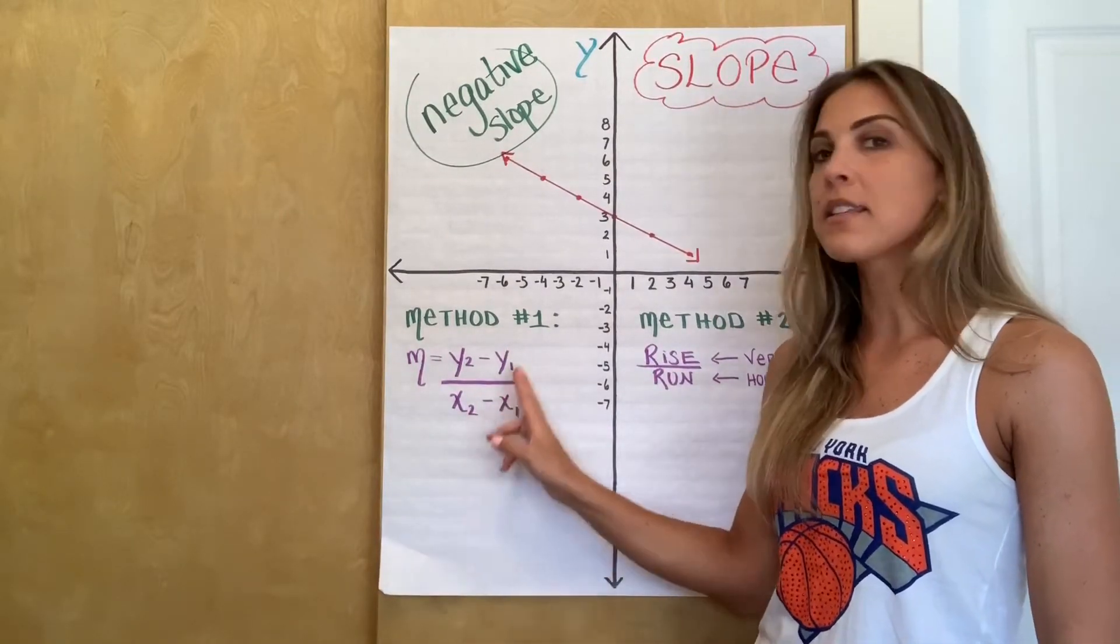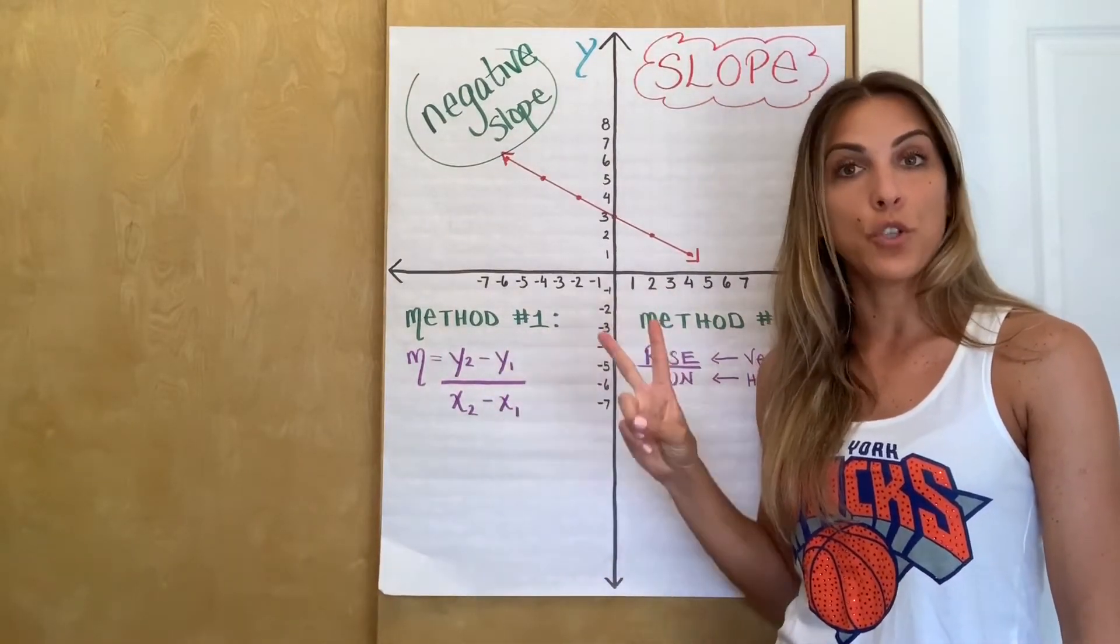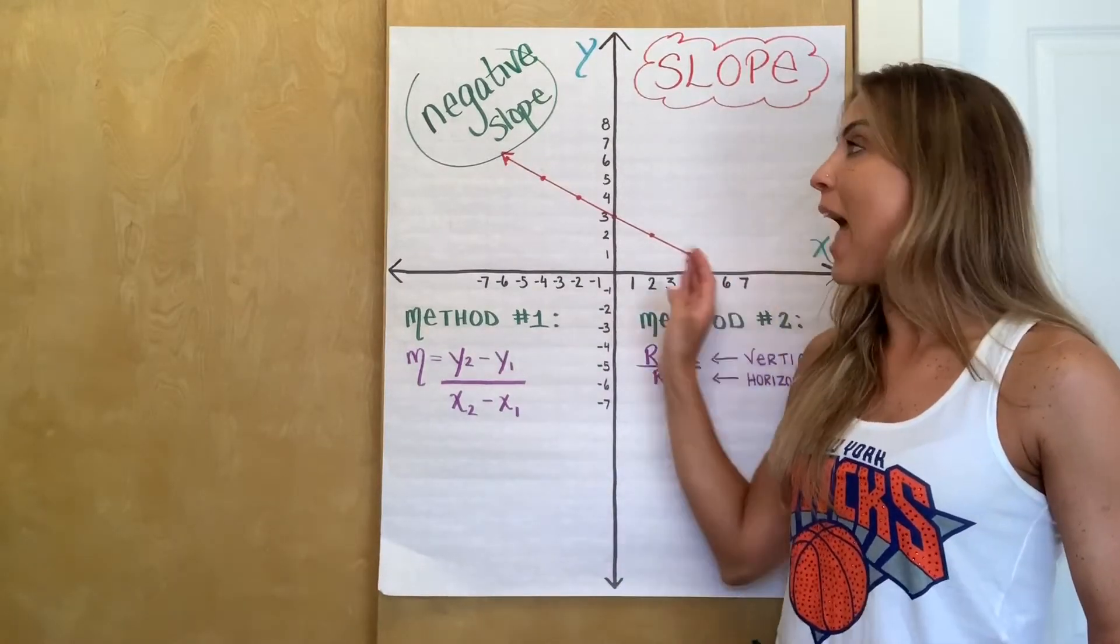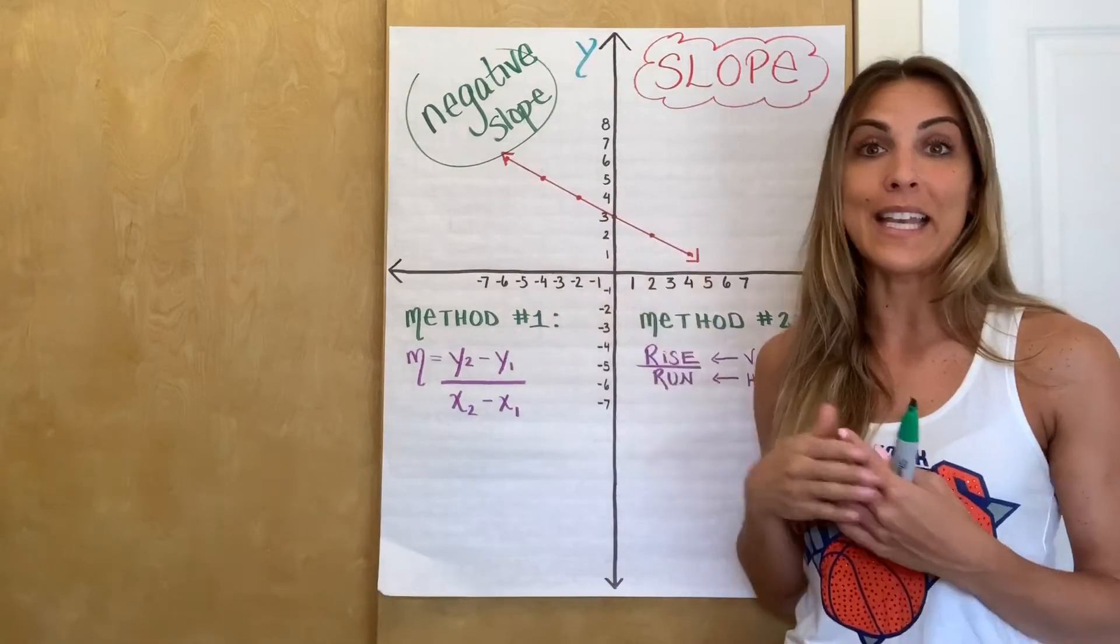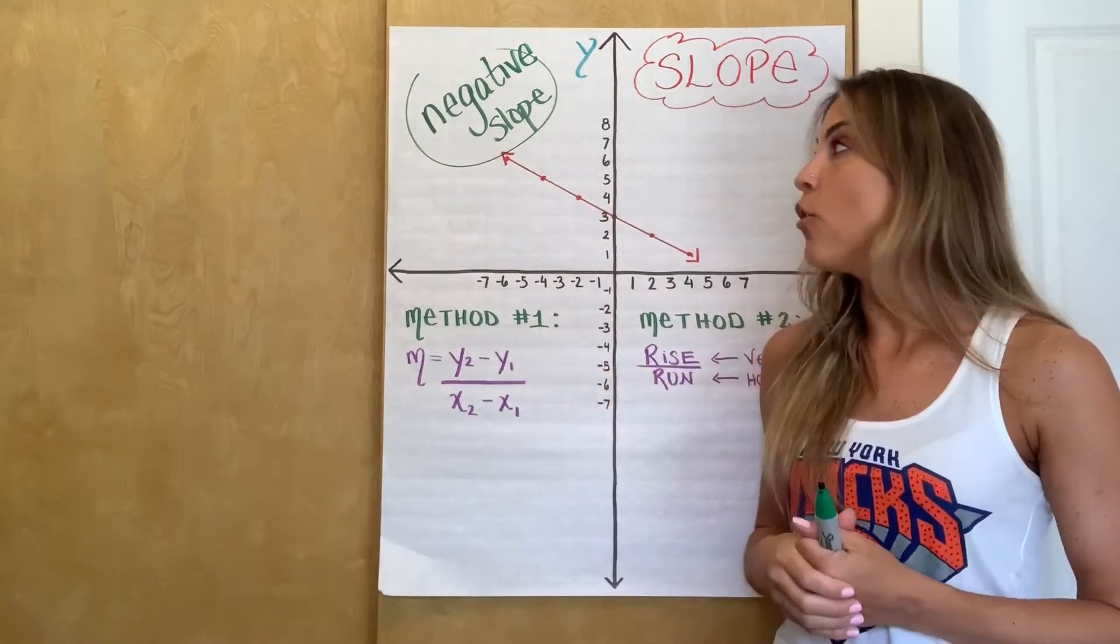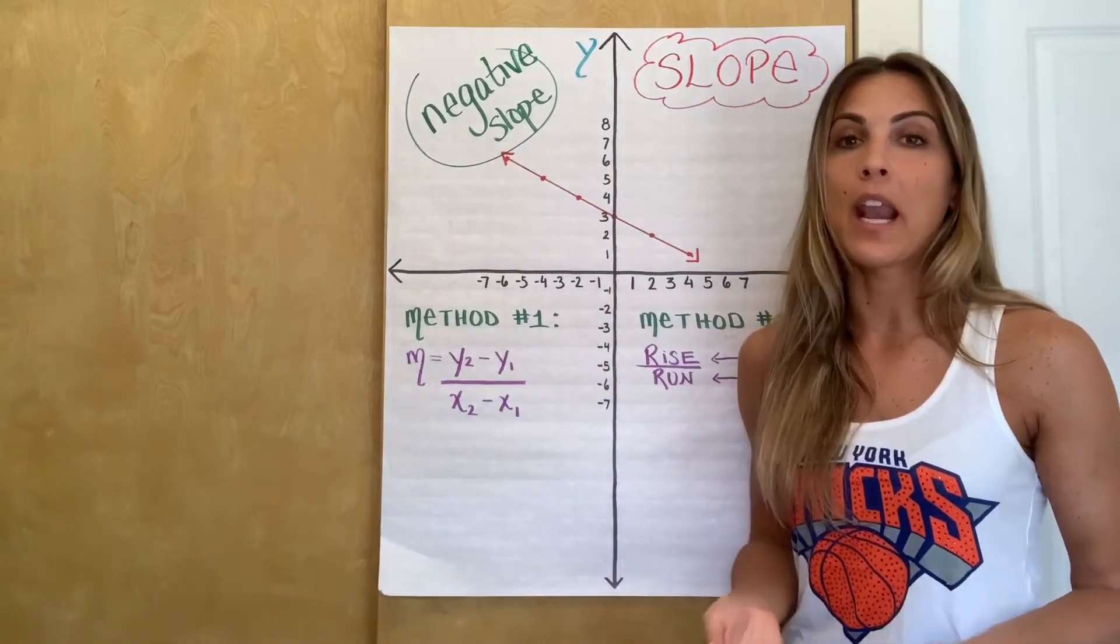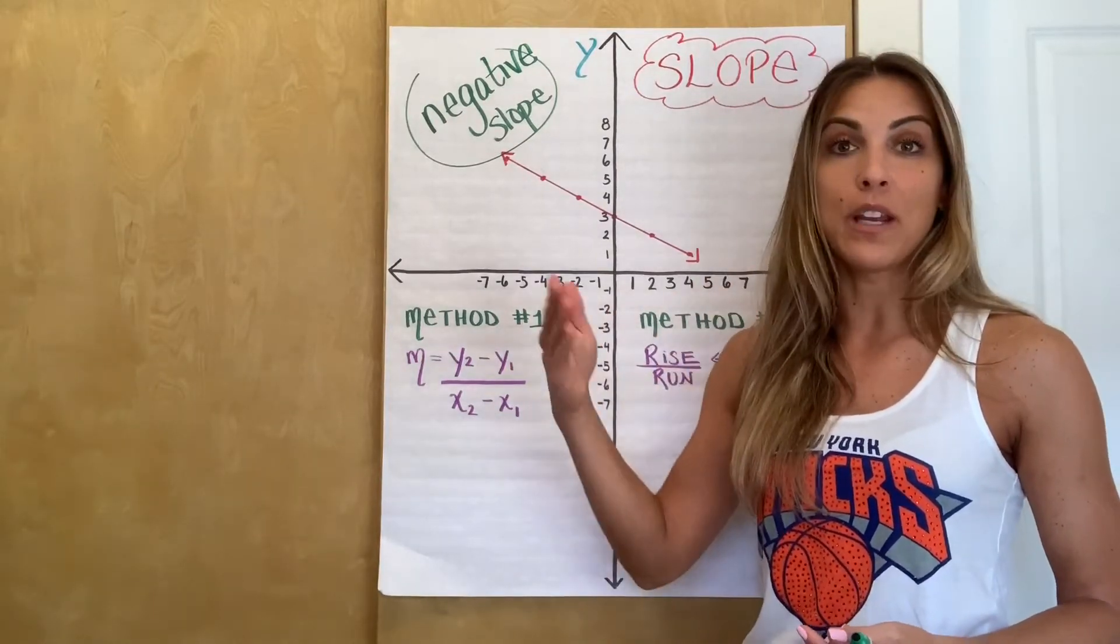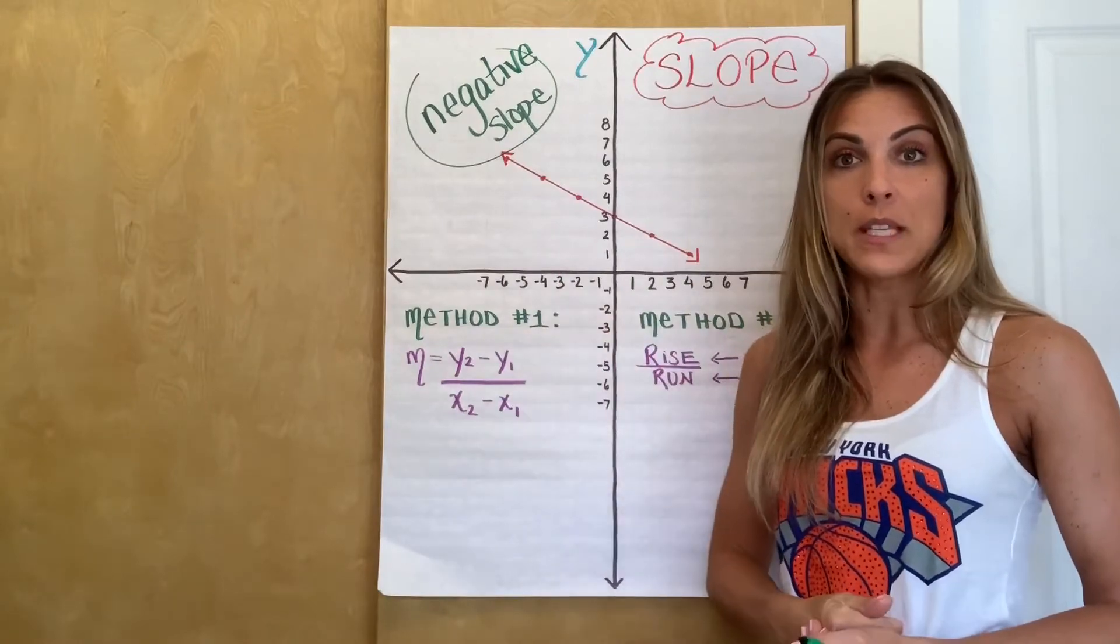So you notice there's two x's and two y's, which means that we need two points in order to use this formula. Now you can choose any two points you want. A line has infinitely many points. And no matter which ones we choose, they're going to have the same slope in between them. Because by definition, a line has a constant rate of change, a constant slope throughout these points.